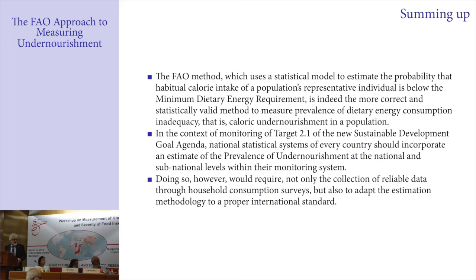Second, in the context of monitoring target 2.1 of the new Sustainable Development Goals agenda, national statistical systems in all countries should incorporate an estimate of the prevalence of undernourishment at both national and sub-national levels within their monitoring systems. Doing so, however, would require not only the collection of reliable data through household consumption surveys — something India already does quite well — but also adapting whatever estimation methodology is used to a proper international standard. We suggest using the FAO method, but it is imperative that the method is implemented correctly. Thank you.